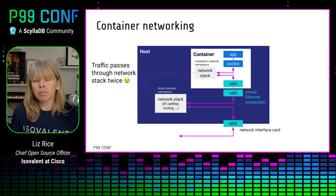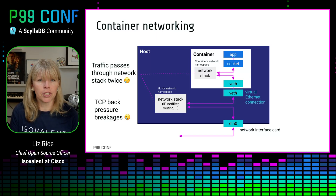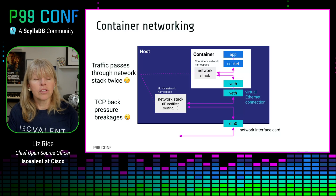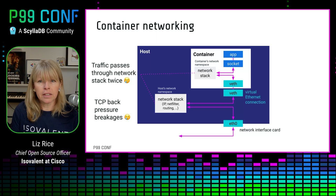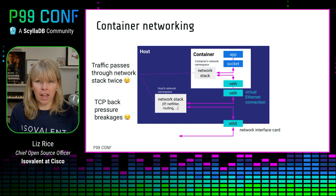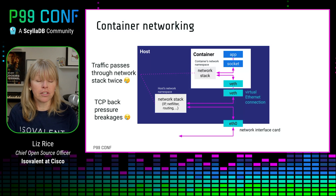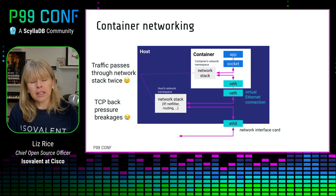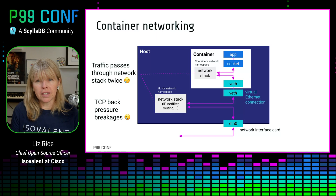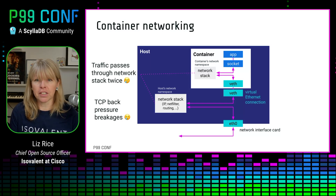There is some overhead associated with simply handling packets twice, but that's not actually the biggest problem we saw in that 100 gigabit benchmarking. At high traffic speeds, there's a more significant problem of TCP back pressure breakage, where socket send buffer limits can be evaded in the upper networking stack, which leads to packets getting dropped. Then the congestion control algorithm kicks in and significantly reduces the throughput. So if we could avoid packets being handled by the upper networking stack, we could avoid these TCP back pressure breakages.